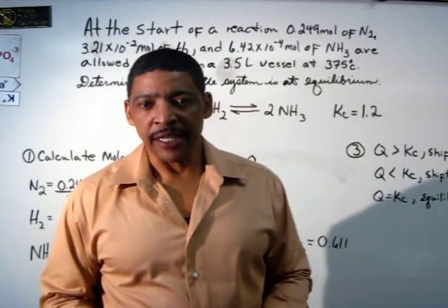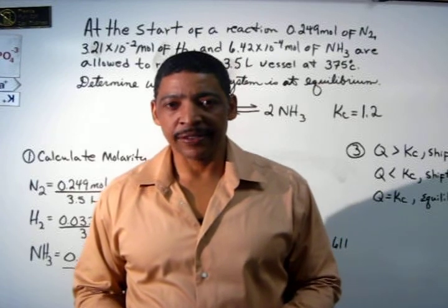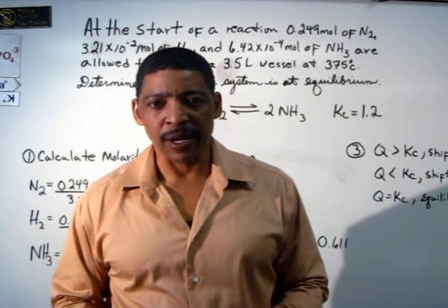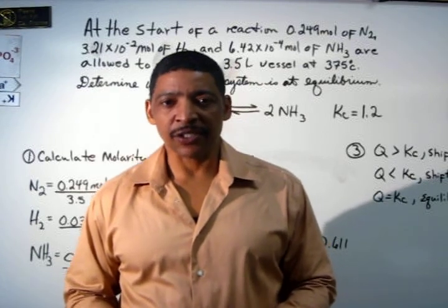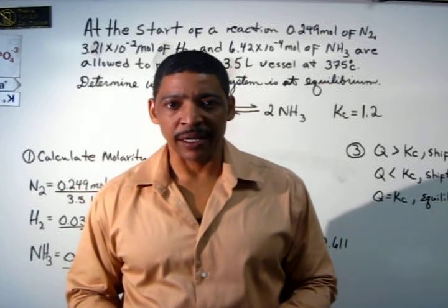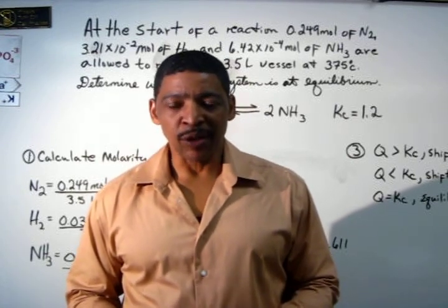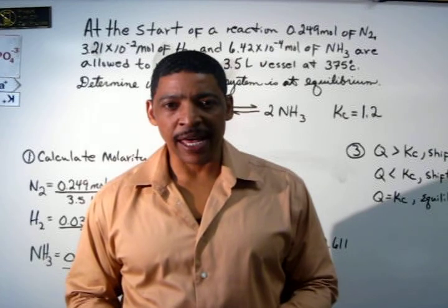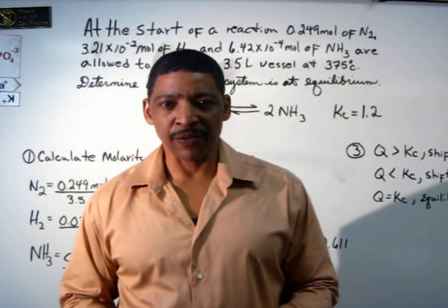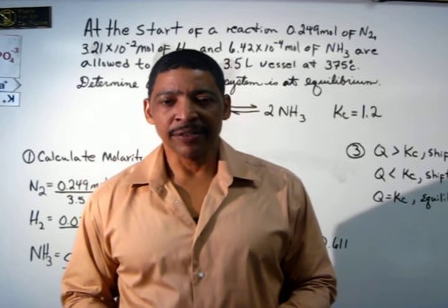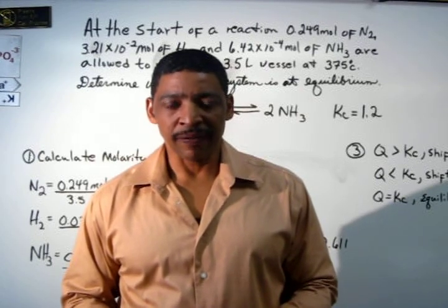When a reaction is in equilibrium, the concentrations of the reactants and the concentration of the products remain steady. Because the concentrations of both reactants and products are not changing, it is possible to calculate an equilibrium constant for that reaction. However, what if the calculation for the equilibrium constant does not match the accepted value for the Kc of that reaction?